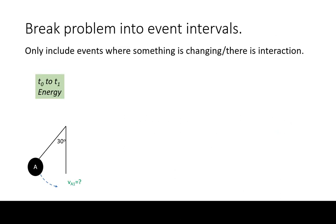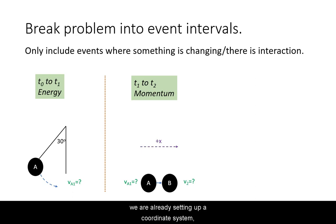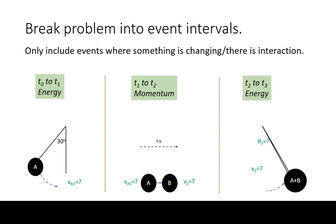We will now break the problem into each time interval. In the first time interval, mass A starts from rest and is allowed to swing freely downwards, taking up speed. In the second time interval, masses A and B collide. Note we are already setting up a coordinate system, as velocity is a vector. In the final time interval, the combined masses are swinging upward, changing speed and height. This makes it an energy problem again.